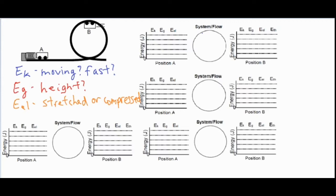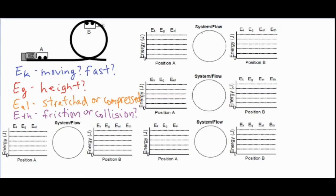The final type of energy we're going to be looking at is thermal energy, which we'll call E_th. In that case, generally speaking, is there some sort of friction or collision? There are other scenarios that may cause thermal energy to be created, but a lot of times it is created by friction between two surfaces or a collision between two objects.